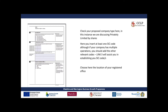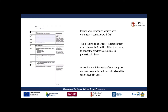A6 is super easy — it's where your registered office is: whether that be England, Scotland, Wales, or Northern Ireland. A7 follows on quite nicely from A6; it's simply the address where your company will be registered. It is vital that the address is consistent with A6 — so if you've selected Northern Ireland in A6, the address in A7 must be a Northern Ireland address.